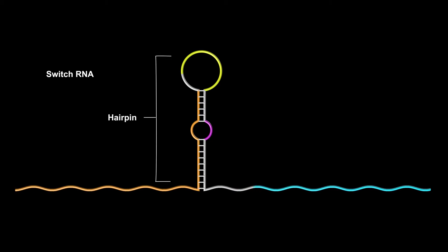A hairpin structure in the toehold switch hides the ribosome binding site and the starting sequence for the gene, and thus represses production of the protein.